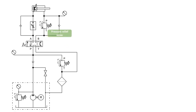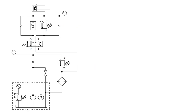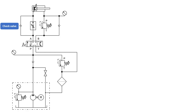Then we have a pressure relief valve which senses the pressure of the fluid coming out of the cylinder from the rod end, a check valve, a pressure gauge, and a flow control valve. There is also another check valve — this is the meter-in circuit that we are talking about, which we'll see later on.